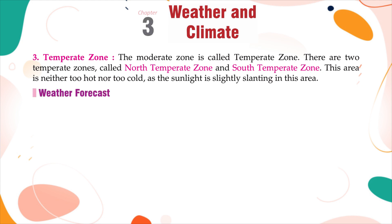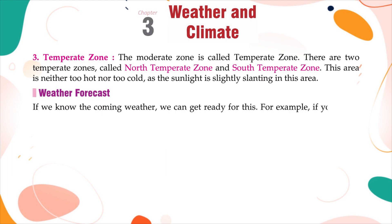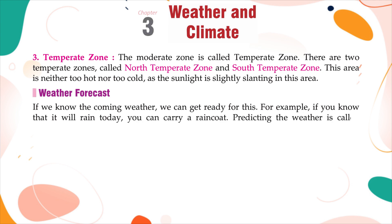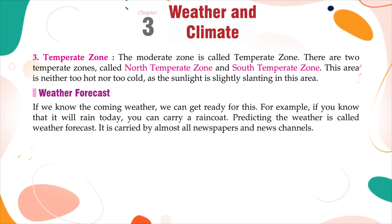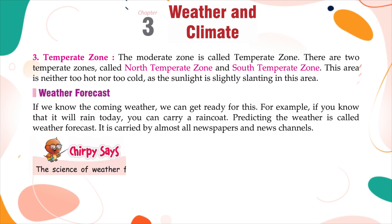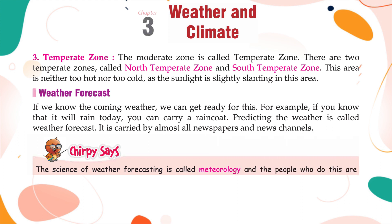Weather forecast. If we know the coming weather, we can get ready for it. For example, if you know that it will rain today, you can carry a raincoat. Predicting the weather is called weather forecast. It is carried by almost all newspapers and news channels. The science of weather forecasting is called meteorology, and the people who do this are called meteorologists. Some people call them weathermen.